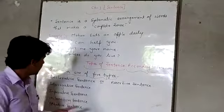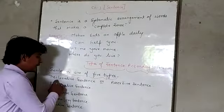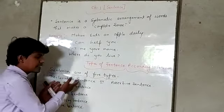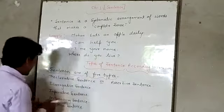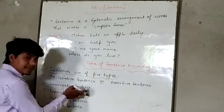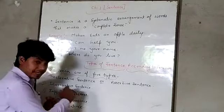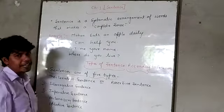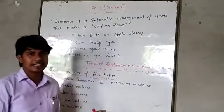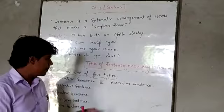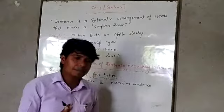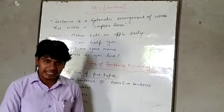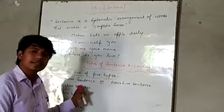The five types of sentences according to function are: first, declarative sentence, also known as assertive sentence; second, interrogative sentence; third, imperative sentence; fourth, exclamative sentence; and fifth, optative sentence. These are the five types of sentences on the basis of function.